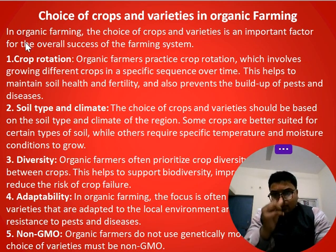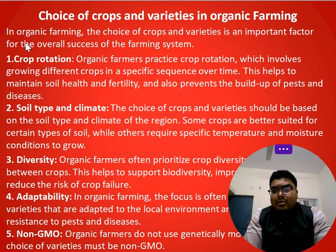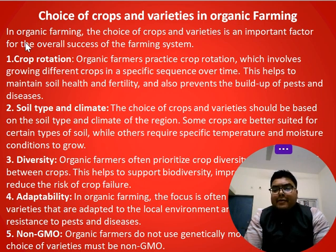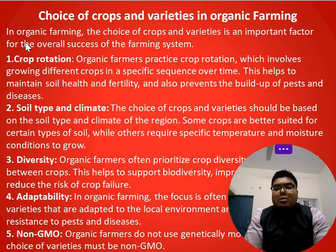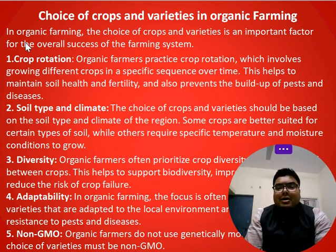In organic farming, the choice of crops and varieties is an important factor for the overall success of the farming system. If we want to promote organic farming, the first thing is that we have to select proper varieties and proper seed. Proper selection of crops should be done to further promote organic farming.